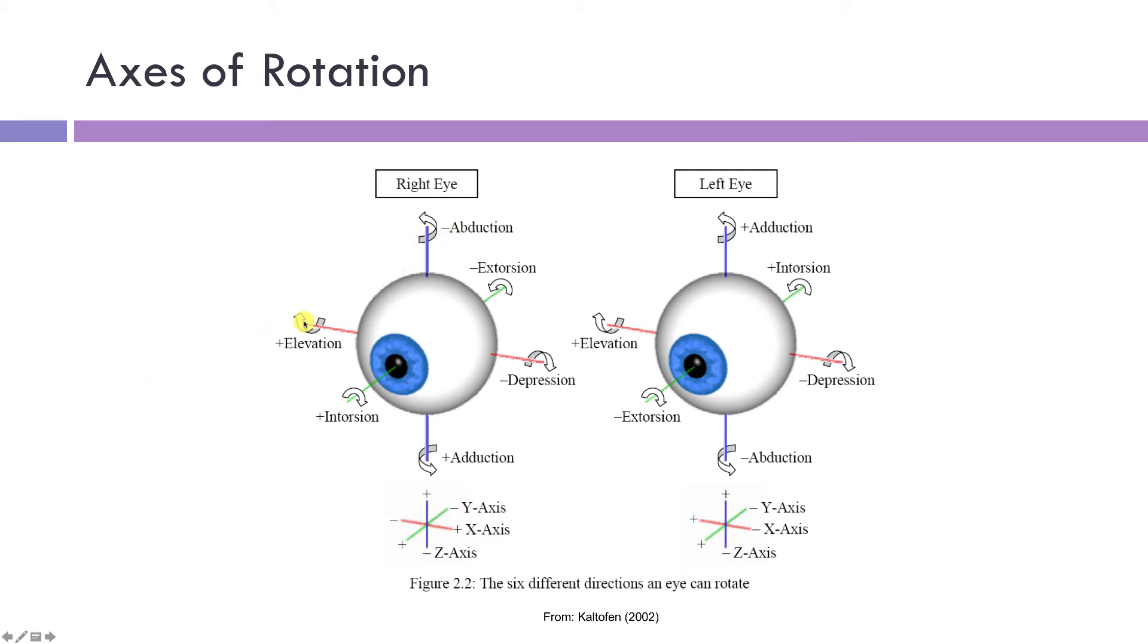Here with the horizontal axis, if you rotate around this, you'll see vertical eye movement. So the eye will move either down or up. And with the anterior or posterior axis, what we get is a torsional eye movement, so the eye will either intort or extort.